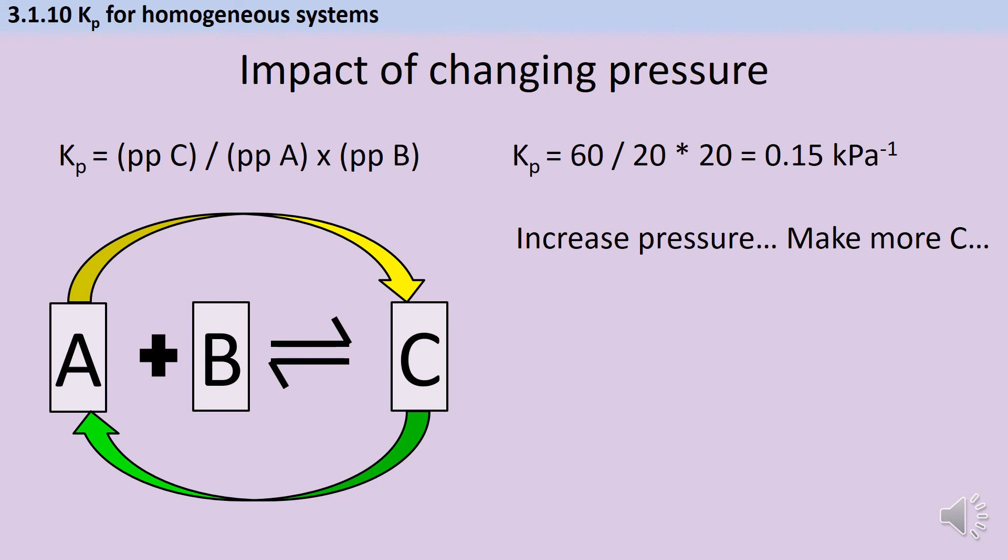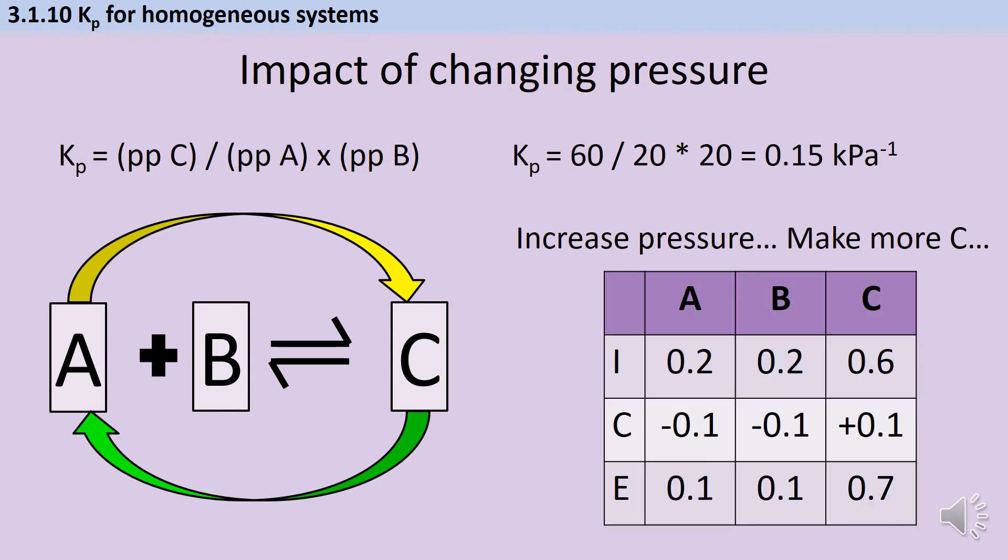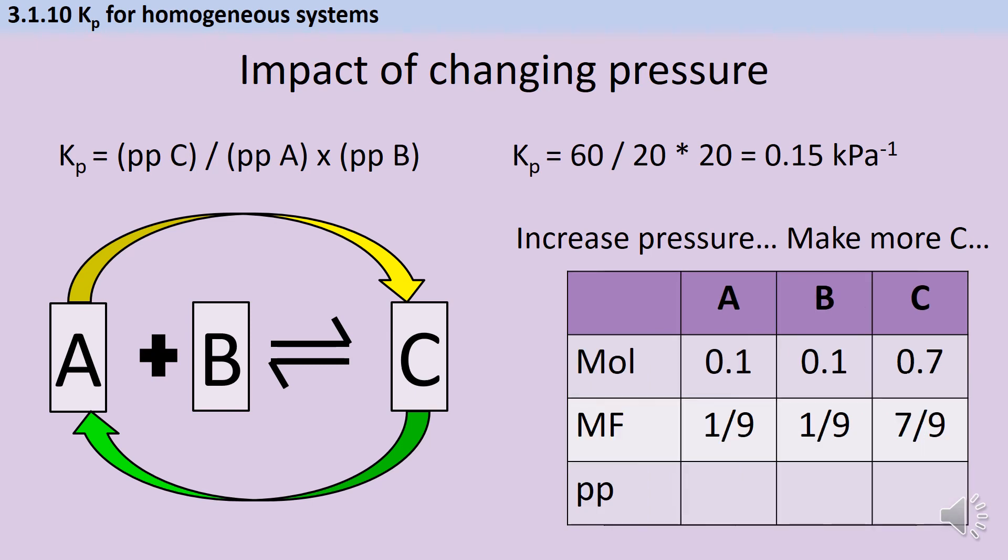But what you also have to remember is that as well as the mole fractions adjusting, the total pressure has increased. And that is going to have an impact too. So let's say for the sake of argument that this pressure change is going to cause exactly the same shift in equilibrium that the change in temperature did in the last example. So again, we end up with 0.1, 0.1 and 0.7 moles of each one of our chemicals. Therefore, we end up with exactly the same mole fractions.